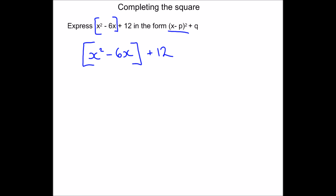Now we get to the completing the square section. The aim is to give me something that when I expand it will give me x squared minus 6x. Looking at just the x squared minus 6x section, we're going to put round brackets and a squared. We want it in this form: round brackets, squared, with an x, and we halve whatever number is in front of the x. Here we've got minus 6 in front of the x, and when I halve minus 6 we get minus 3. The sign stays the same — had it been plus 6x it would end up being plus 3 inside the brackets.